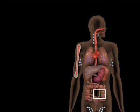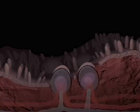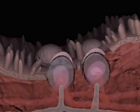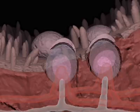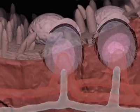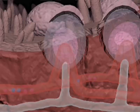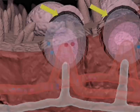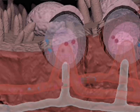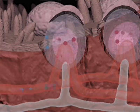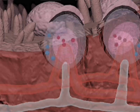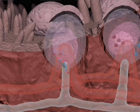Cells entering into the Peyer's patches do so through the high endothelial venules (HEVs). Lymphocytes drain out through the lymphatics to the local lymph nodes. Antigen comes from the lumen of the gut. A group of special cells across the top of the patch, called M-cells, take antigen from the gut and transport it across to the area where the lymphocytes can recognize it. If an immune response takes place, these lymphocytes will migrate to the infected area of mucosa.